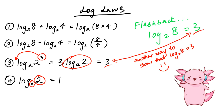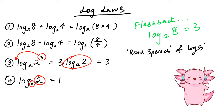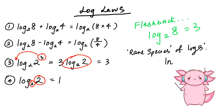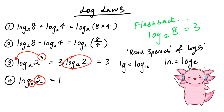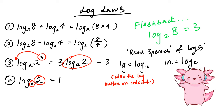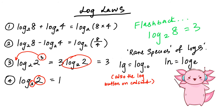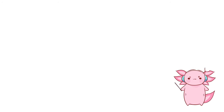There are also a few rare species of logs: LN and LG. LN means log base e, and LG means log base 10. The log button on your calculator is actually LG.